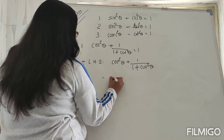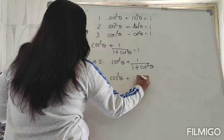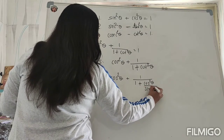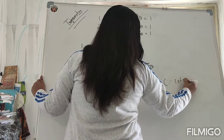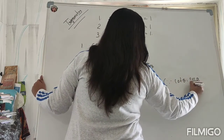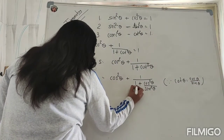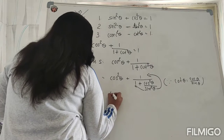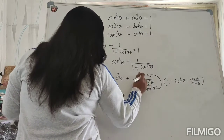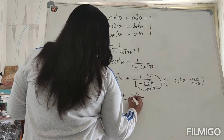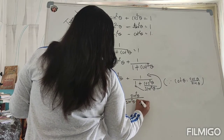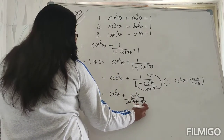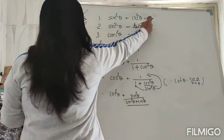So cos²θ we are keeping as it is. And here this cot²θ I am writing as cos²θ / sin²θ, because we know that cot θ is the ratio of cosθ and sinθ. Now this sinθ will go to the denominator as well. Denominator always comes with numerator. So cos²θ + sin²θ upon sin²θ + cos²θ.